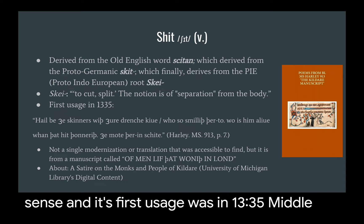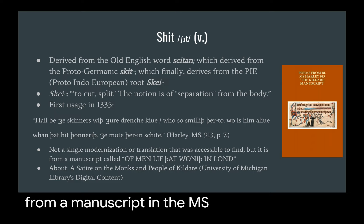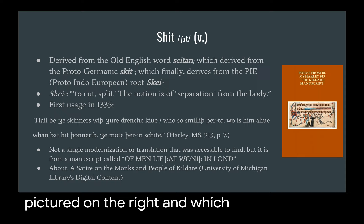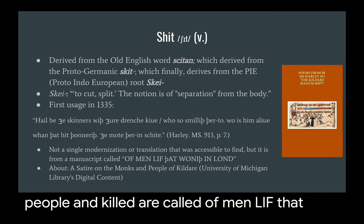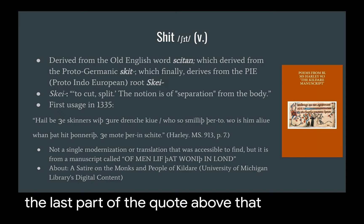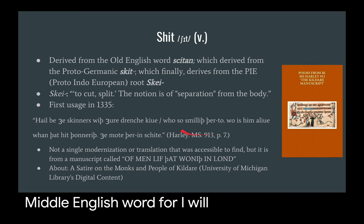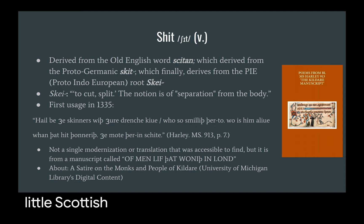Its first usage was in 1335, Middle English, cited by the Oxford English Dictionary from a manuscript in the MS Harley 913 — which is pictured on the right — in which there is a satire on the lives of the monks of people in Kildare called 'Of men live that wanteth in Lund.' The last part of the quote contains the Middle English word for shit. I will circle it. It says, 'ye mote there in shite.' And I love saying it with this little Scottish accent in my head, because it makes it sound very dark and mysterious and angry, and it's kind of fun.